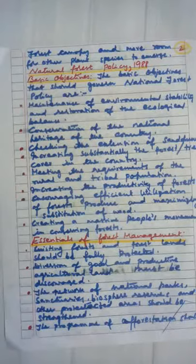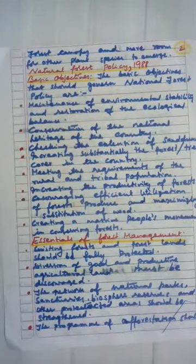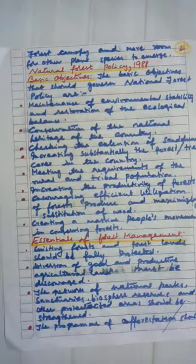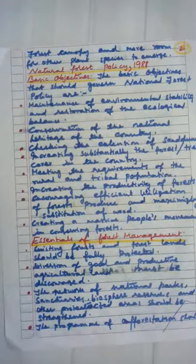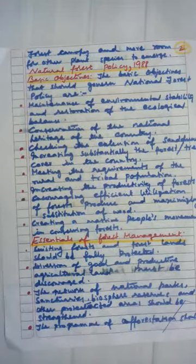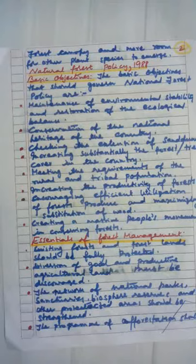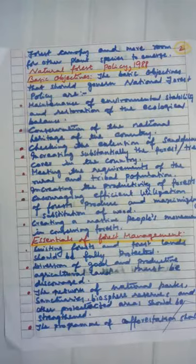Provision of sufficient fuelwood and pasture, especially in areas adjoining forests, is necessary to prevent depletion of forests beyond the sustainable limit. Since fuel wood continues to be the predominant source of energy in rural areas, the program of afforestation should be intensified with special emphasis on augmenting fuel wood production to meet the requirements of rural people. Minor forest produce provides sustenance to tribal populations and other communities residing in and around the forests; such produce should be protected, improved, and their production enhanced.